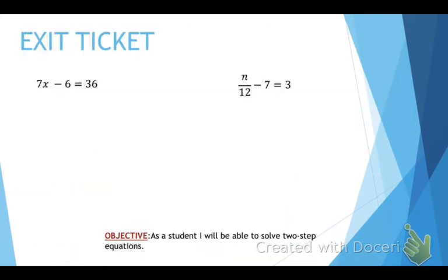What do you need to remember? Order of operations backwards, and you always do the inverse or opposite operation. Ladies and gentlemen, you have two problems as your exit ticket. Good luck. Put them on your graphic organizer and show them to Mr. Williams to get them checked, and then go ahead and do worksheet number 5.